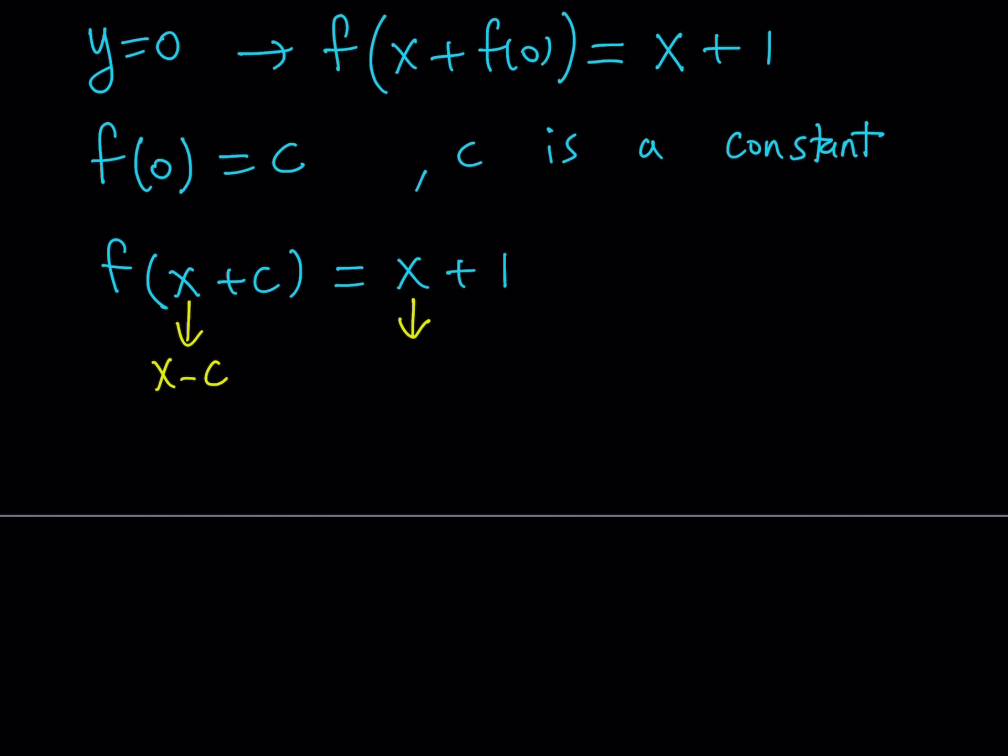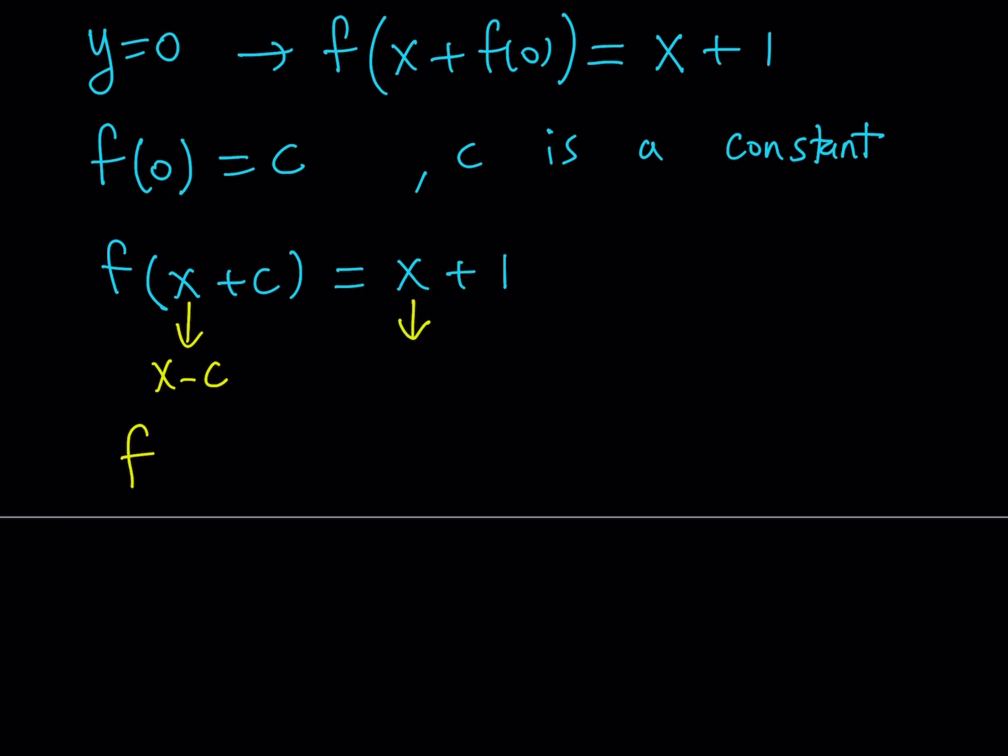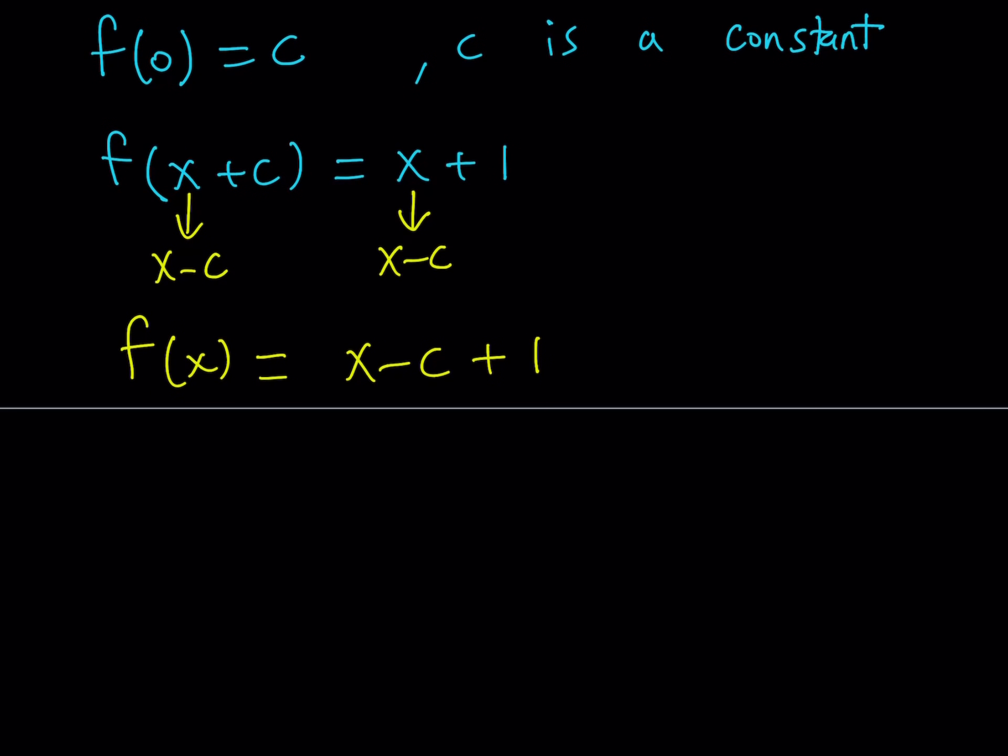So here on the left hand side, inside the parentheses, we get x minus c plus c, which is f of x. And on the right hand side, since we are doing the same thing, we're going to be getting x minus c plus 1. Great. Now we've got an expression for f of x, so we can just go ahead and substitute this into the original problem.